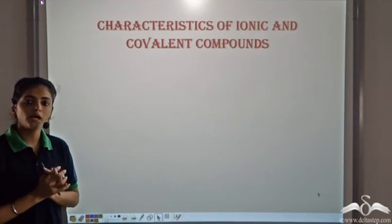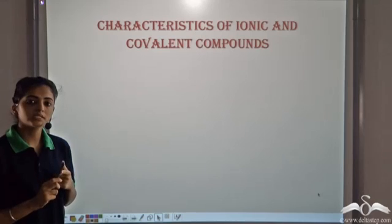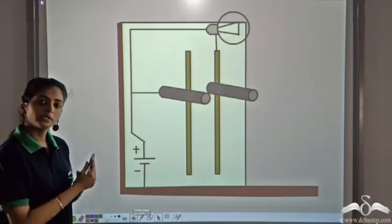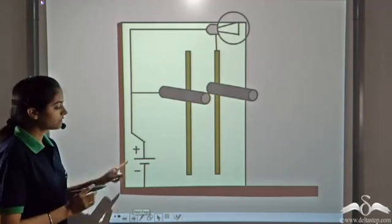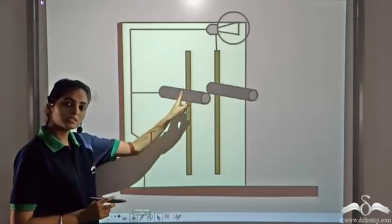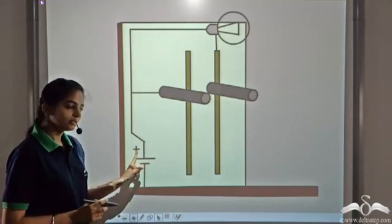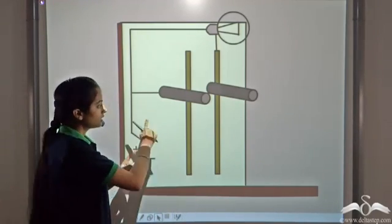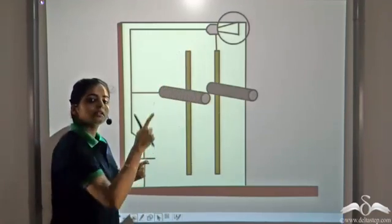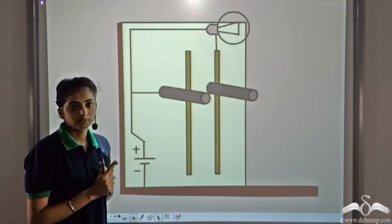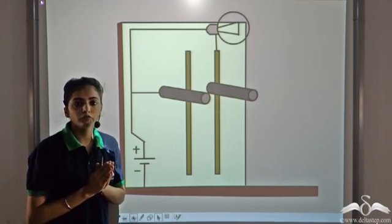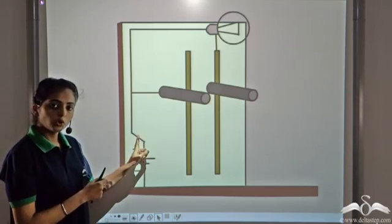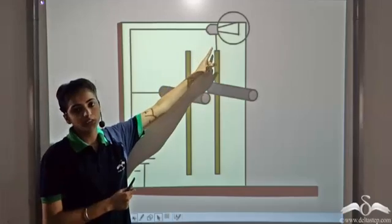Let's look at some of the characteristics of ionic and covalent compounds. First, we'll see whether they conduct electricity or not. For this, we take this experimental setup. In this, we have a battery. This metallic rod is connected to the positive end and this metallic rod is internally connected to the negative end of the battery. This battery is further connected to the bulb. The bulb will only glow when there is a complete circuit. Electricity flows when there is a closed loop or a complete circuit.